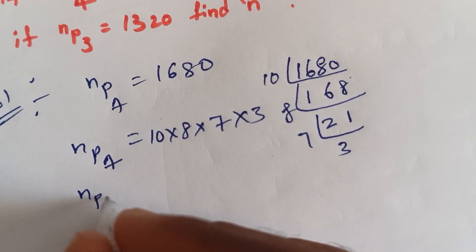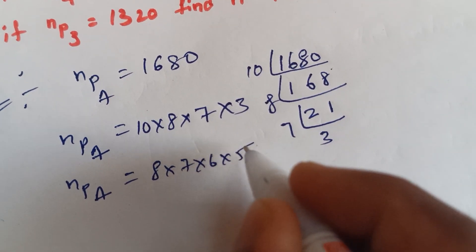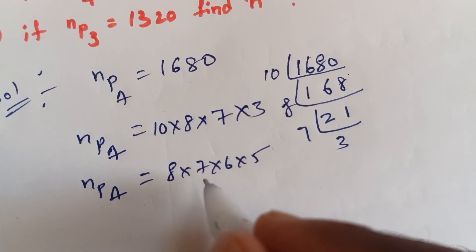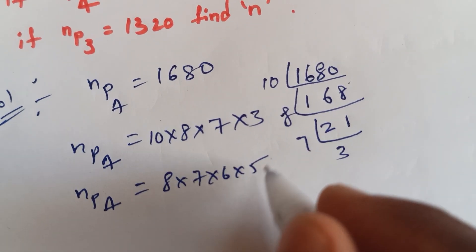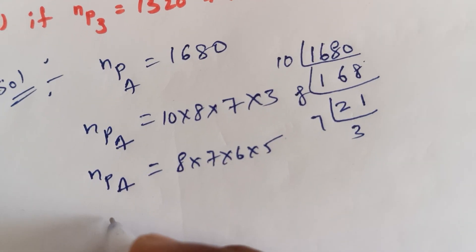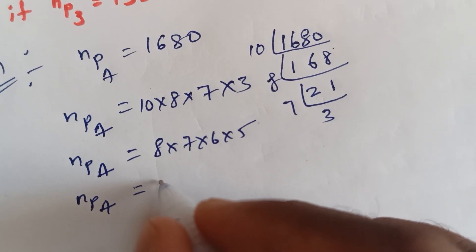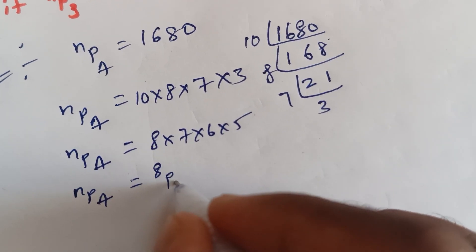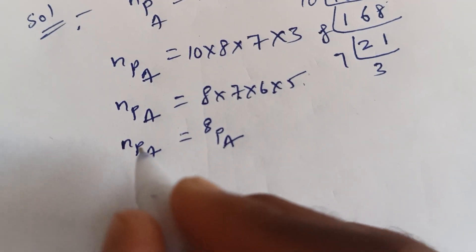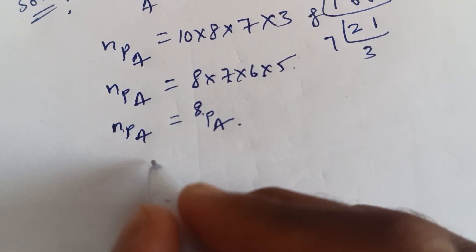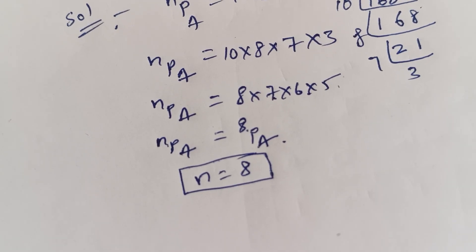So NP4 equals to 8, 6. NP4 equals to 8. So NP4 equals to 8, 8.